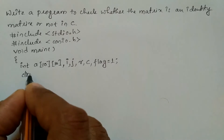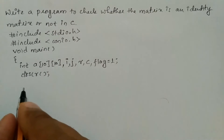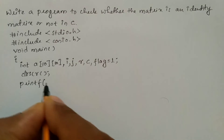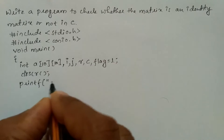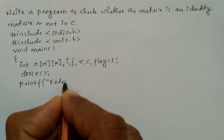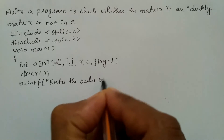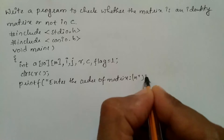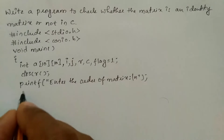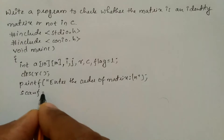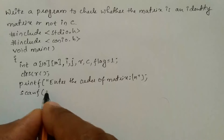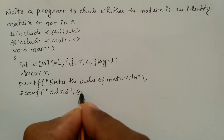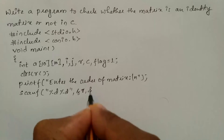After this I am going to write the clrscr function which is used to clear the screen, then allows the user to enter the order of matrix using printf function. So here I am going to write 'enter the order of matrix', backslash n, and put semicolon. Now we will receive input from the user through keyboard using scanf. Here I am going to write %d and %d, put comma, ampersand of row and ampersand of column.